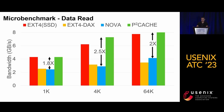Further, we demonstrate how P2Cache benefits read performance. In this test, we pre-created a file and wrote data to it so the file data could be cached in the page cache. The figure shows that P2Cache achieves the same or slightly better performance as EXT4-default, which both leverage the DRAM page cache. We observe that P2Cache outperforms other PM-related approaches significantly, because other PM-based approaches do not leverage the page cache.